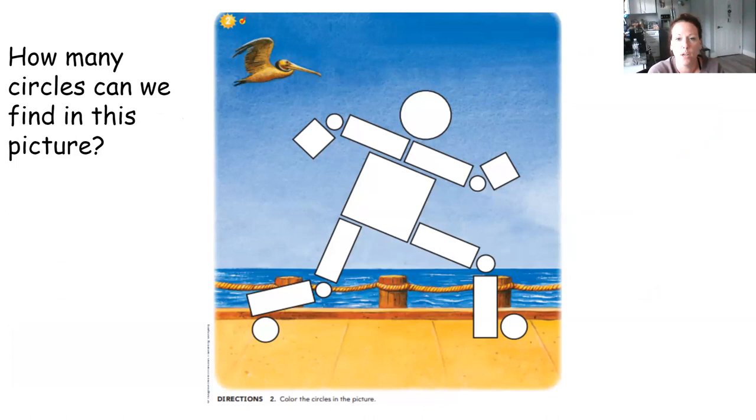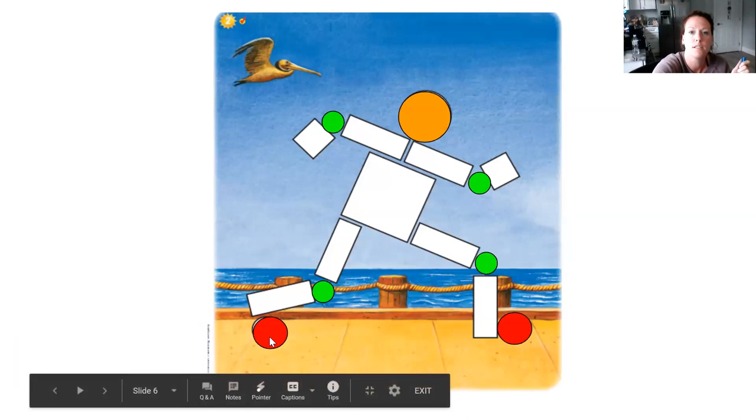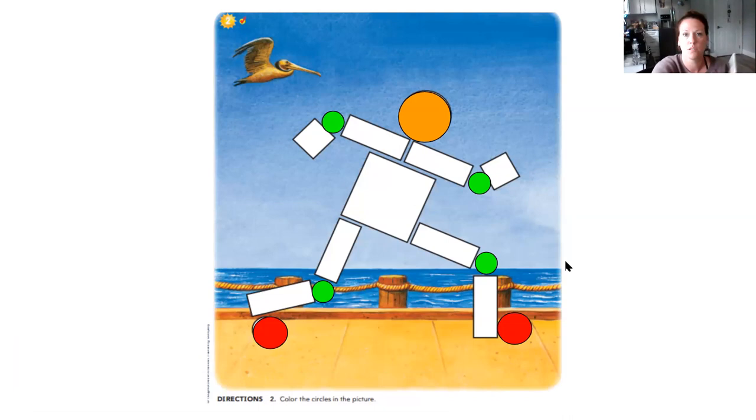Let's look at this picture. How many circles can we find in this picture? I want you to go ahead and take a second to count those circles, and then we'll see on the next slide if you got all of them. Go ahead and count those circles. If you need more time, you can pause the video. All right, let's count those circles together: one, two, three, four, five, six, seven. This picture had seven circles.